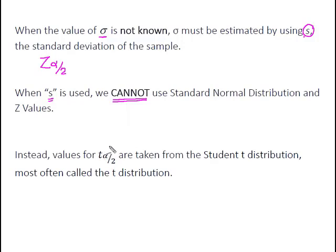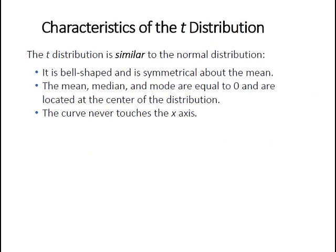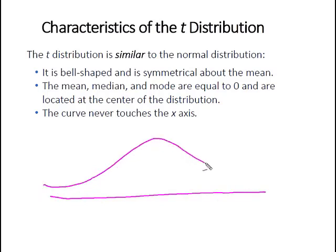Instead of z values, we're going to use what we refer to as a T value — or, in the case of a confidence interval, T alpha divided by 2. We get those values from the Student T distribution. It's very similar to the standard normal distribution but has a couple of key differences. The T distribution is similar to normal distribution in that it's generally bell-shaped and symmetrical about the mean, with 50% of the data above and 50% below. The mean, median, and mode are all the same and located at the center. And it's this asymptotic curve that never touches the horizontal axis.